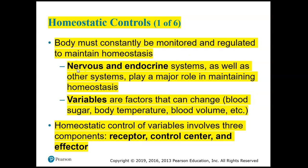First of all, make sure that you know the two body systems that play a major role in maintaining homeostasis by controlling the other systems: the nervous and the endocrine systems. The nervous system tends to have faster responses that don't last as long, and the endocrine has responses that take longer but last longer.